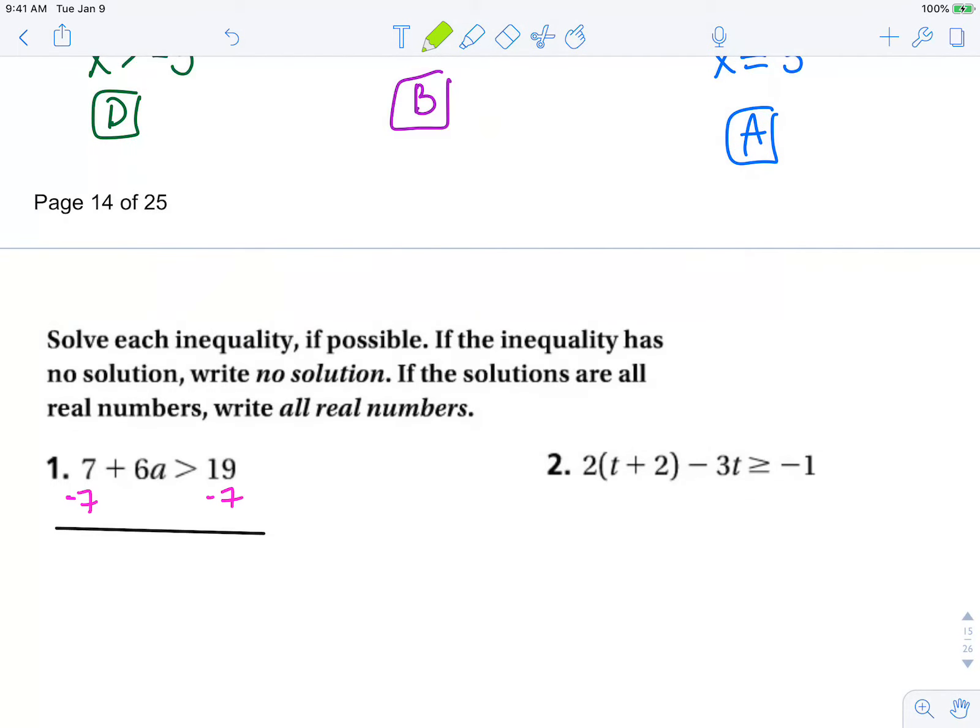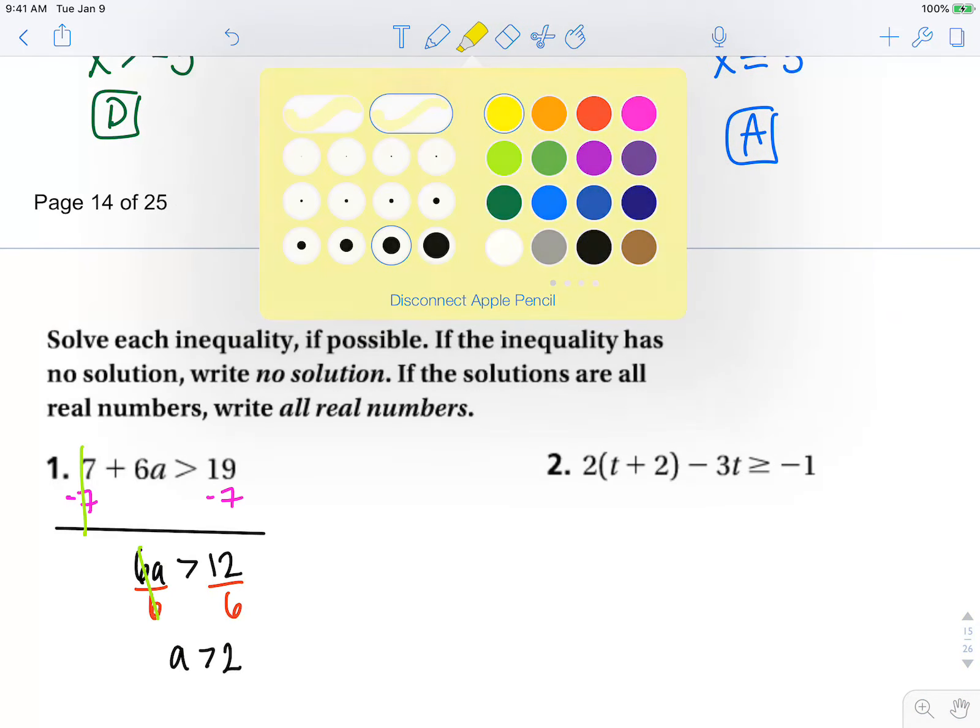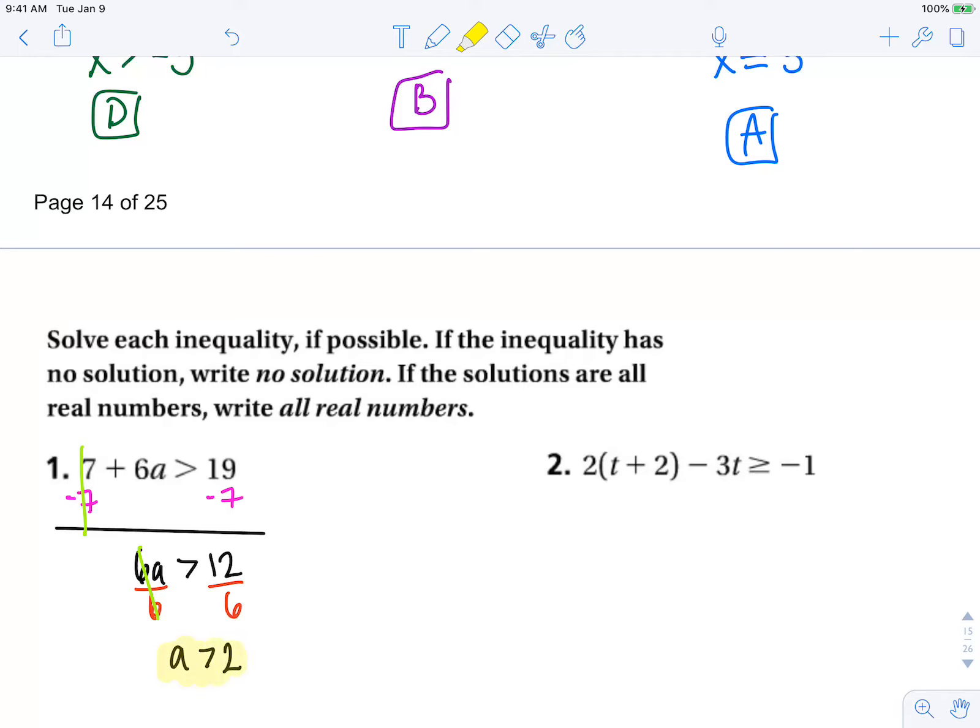Our sevens cancel and we're left with 6a > 12. Our last step to isolate a is to divide by six, and we have a > 2. The directions did not tell us to graph, so we're not going to worry about that.